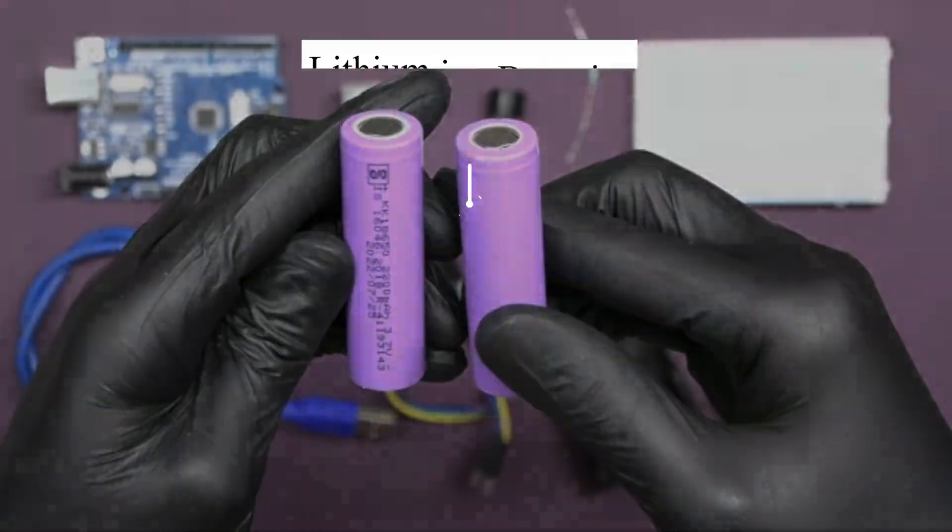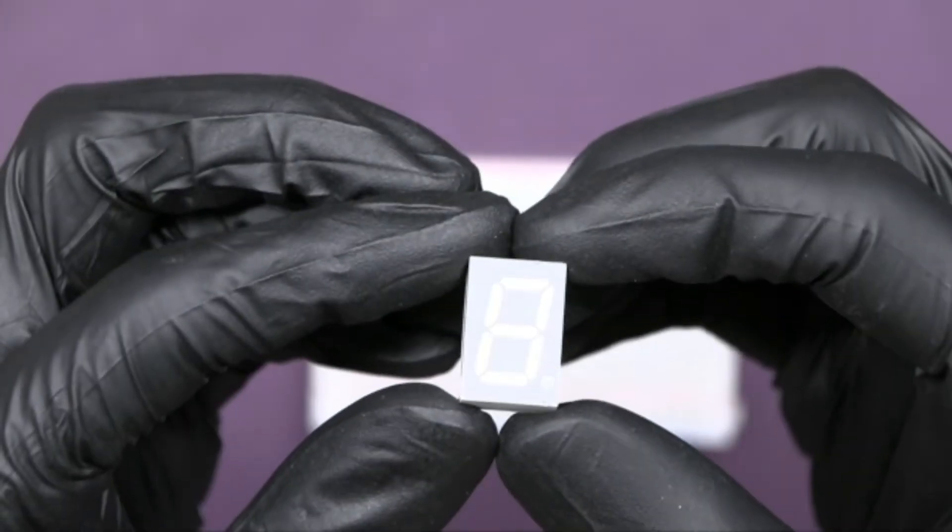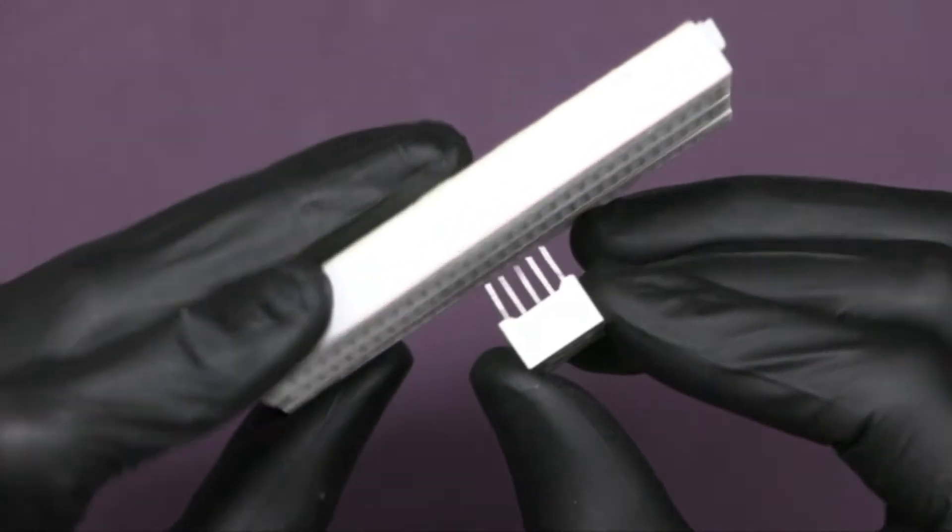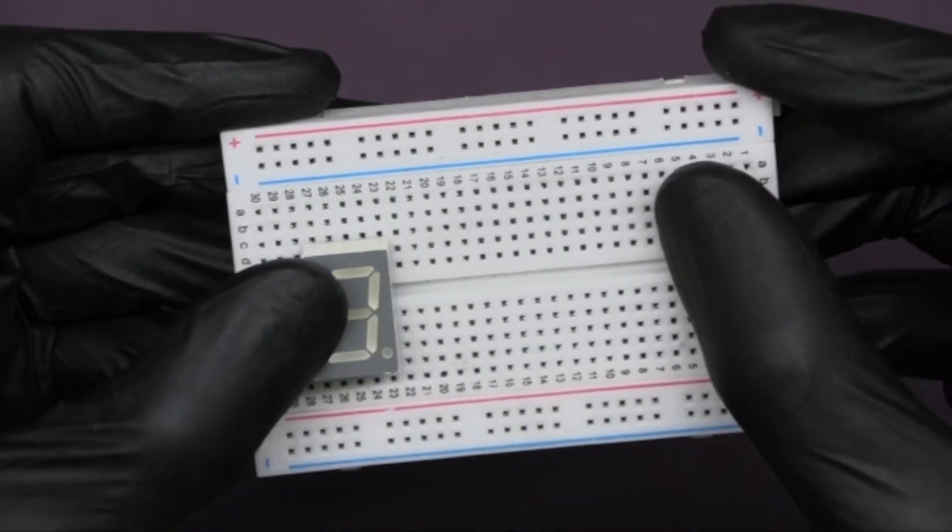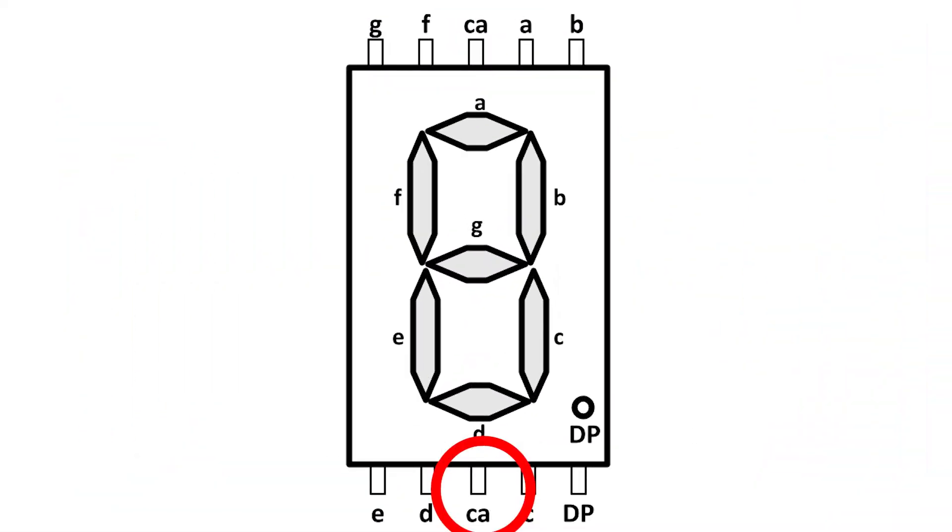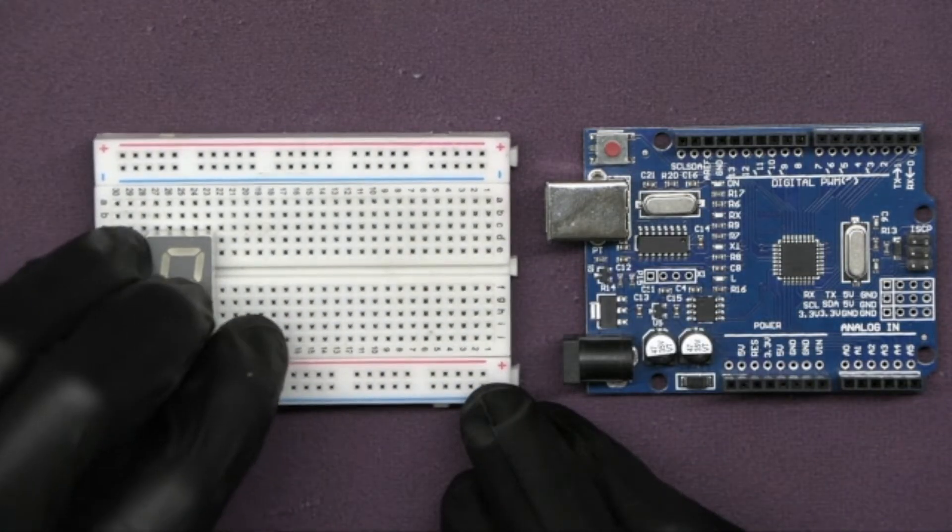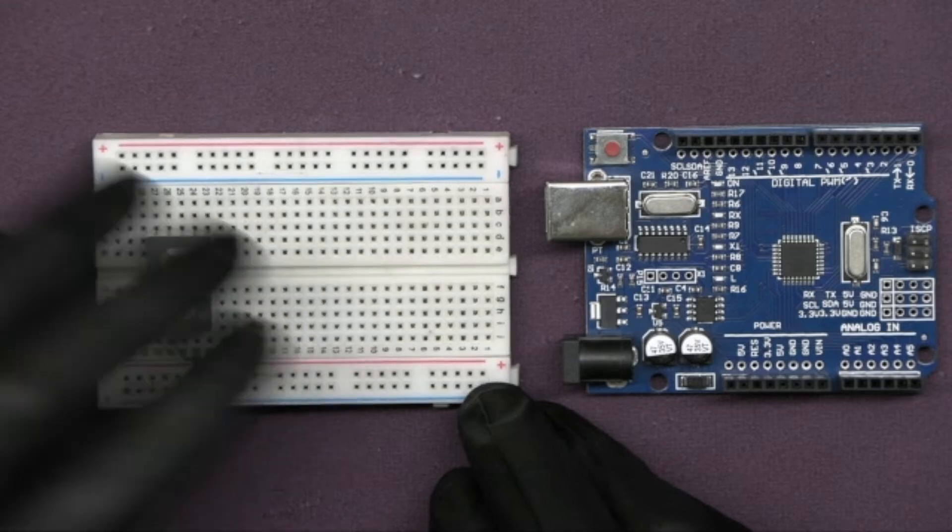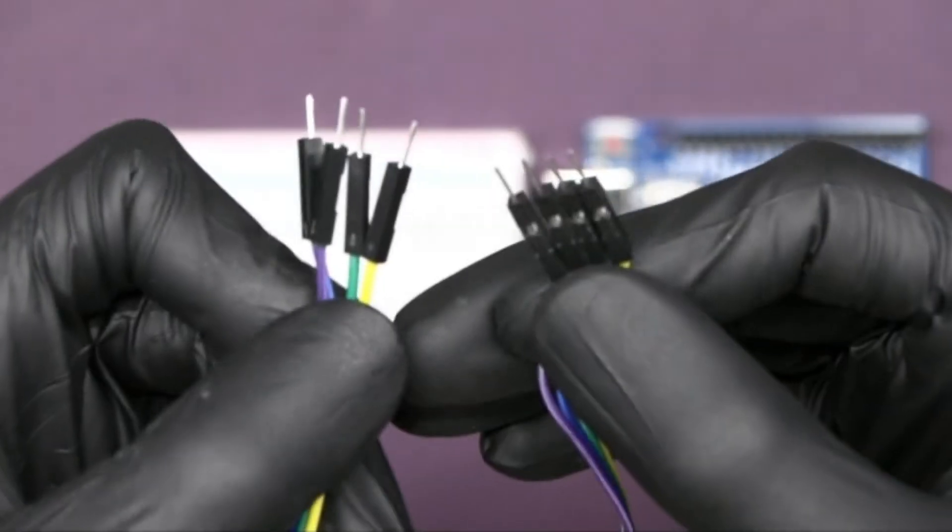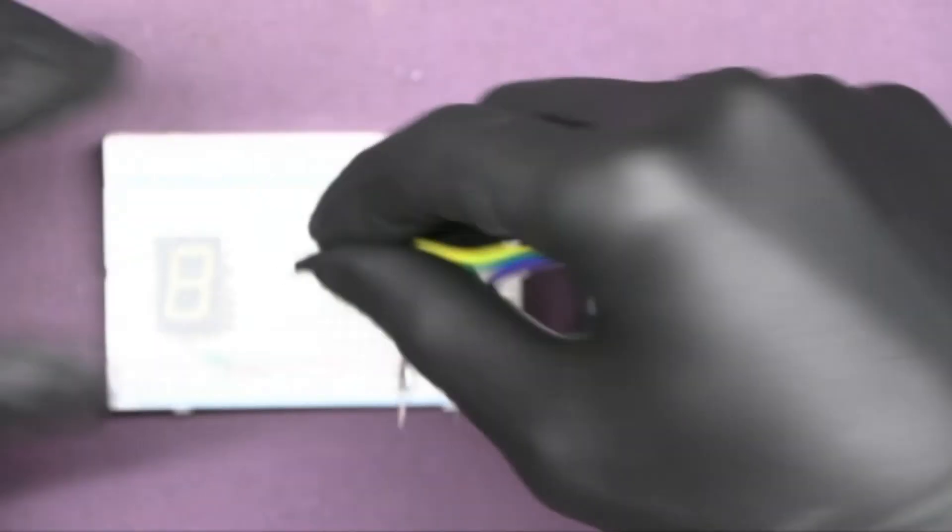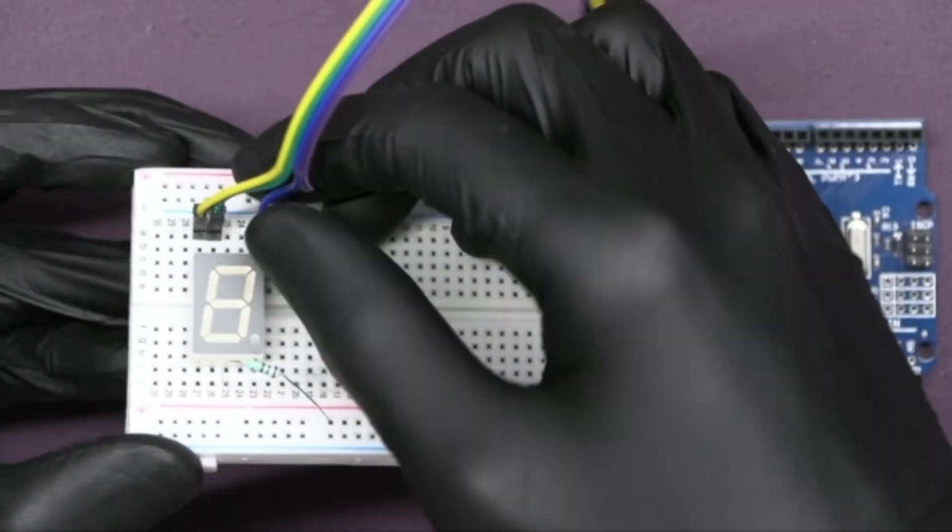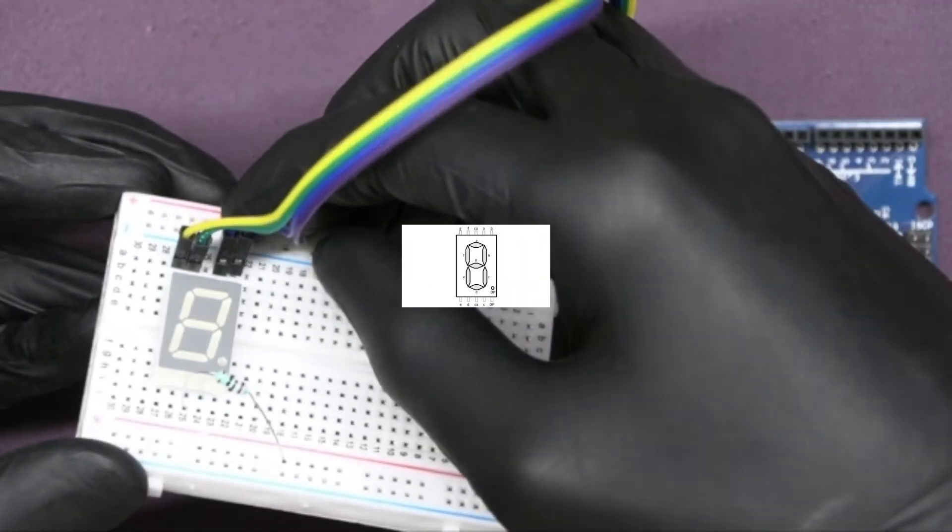Let's go through the circuit. Place the seven segment display onto the breadboard securely with all the pins accessible. Connect the common anode pin, that is the center pin on either side of the display, to the positive bus of the breadboard.